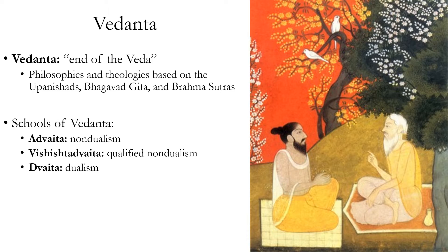There are multiple schools of Vedanta, so Vedanta is not one philosophical system but several different schools of thought that attempt to interpret the Upanishads and other Vedanta texts philosophically. The three main schools are Advaita or non-dual, Vishishtadvaita or qualified non-dual, and Dvaita or dual philosophy.